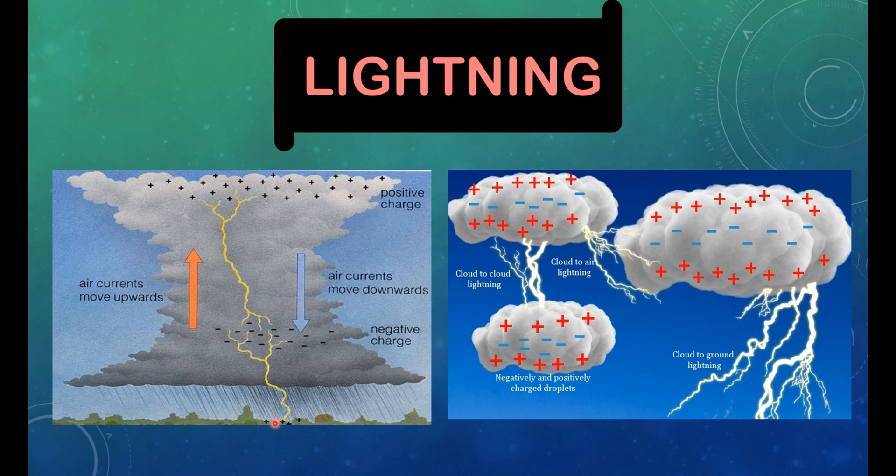During the development of thunderstorm, the air current moves upwards while the water drops move downwards. This movement causes separation of charges. The positive charge collects near the upper edges of the clouds and the negative charge accumulates near the lower edges. There is accumulation of positive charge near the ground also. When the amount of accumulated charges becomes very large, the air which is normally a poor conductor of electricity is no longer able to resist their flow. Negative and positive charges meet producing streaks of bright light and sound.